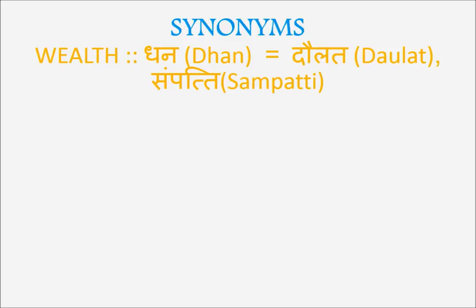'Dhan,' 'daulat,' and 'sampatti' all mean wealth. For example: 'Mujhe koi dhan daulat nahi chahiye, mujhe sirf tumhara pyaar chahiye' — I don't want any wealth, I just want your love. Another example: 'Dhan daulat se khushi nahi kharidi jaati' — you can't always buy happiness with wealth. So 'dhan,' 'daulat,' and 'sampatti' are synonyms for wealth.